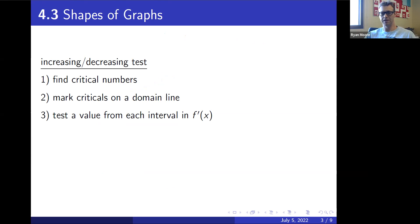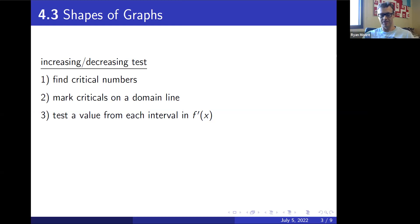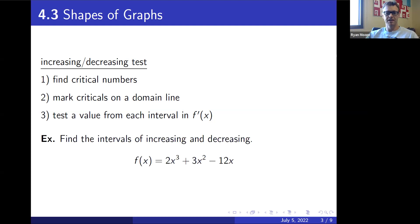The increasing and decreasing test lets us figure out which intervals a function is increasing and which it is decreasing. Step one: find the critical numbers — where the derivative equals zero or does not exist. Step two: mark those critical numbers on a domain line, dividing it into intervals. Step three: test a value from each interval into f'(x), which tells us whether each interval is increasing or decreasing in the original function.